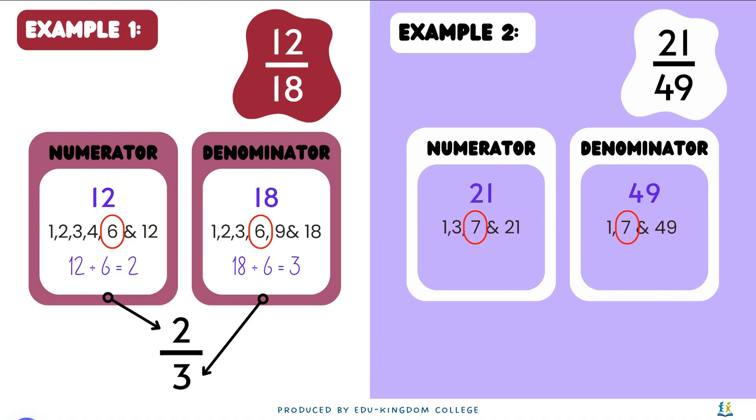For example number 2 on the right here, we can see that 21 and 49 have HCF of 7. 21 divided by 7 gives 3, and 49 divided by 7 gives 7. Putting the new numbers together gives 3 over 7. So the simplified form of 21 over 49 is going to be 3 over 7.